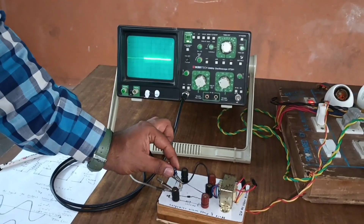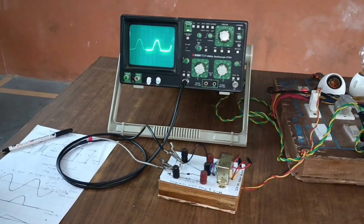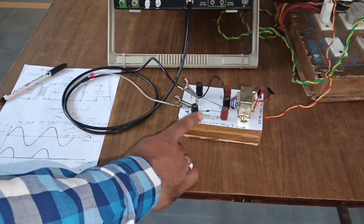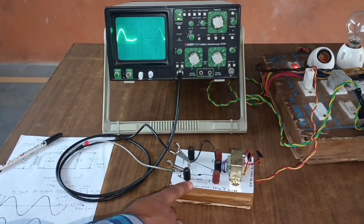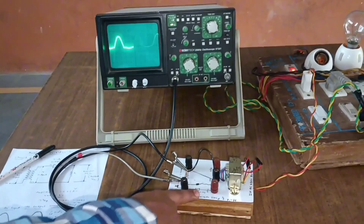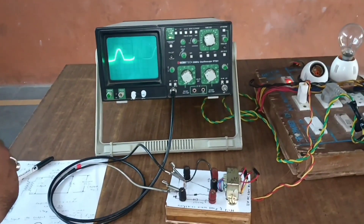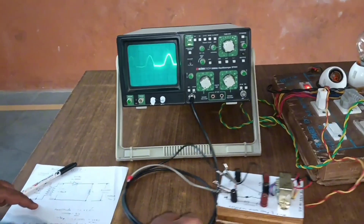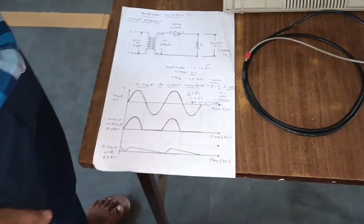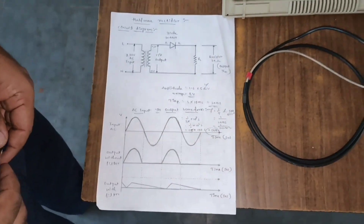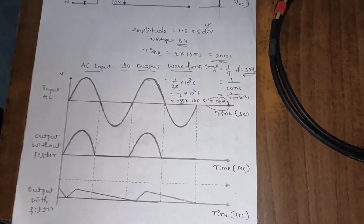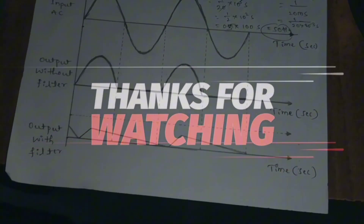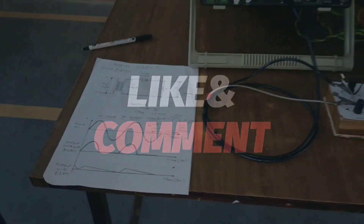When we remove the capacitor, we get the output waveform without filter — only the diode. This completes the total circuit showing how to connect a half-wave rectifier: a diode and resistor connected to the center-tap transformer (12-0-12) with 230 volt AC input supply. The waveforms and calculations are also demonstrated in this project. Watch the complete video to understand the calculation and waveform of the half-wave rectifier.